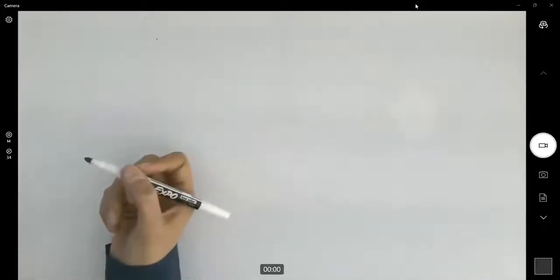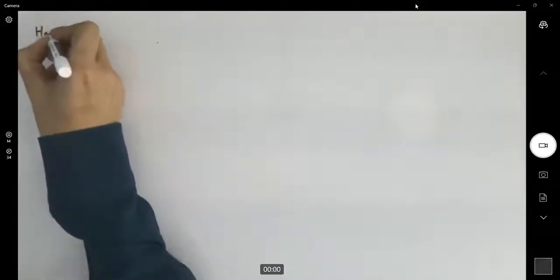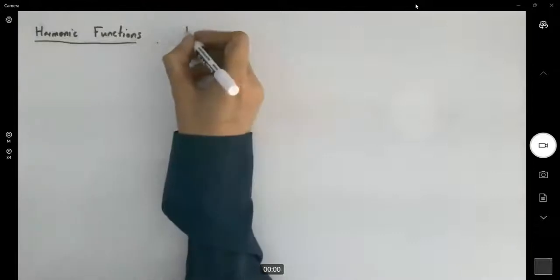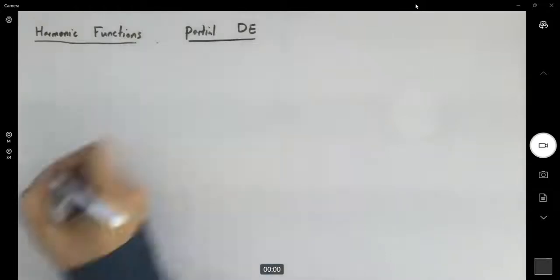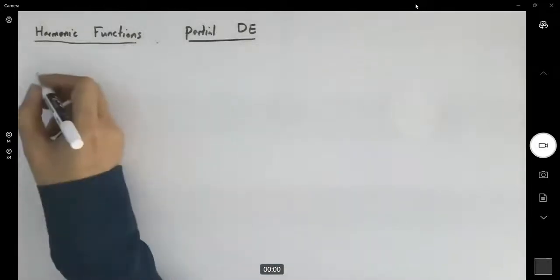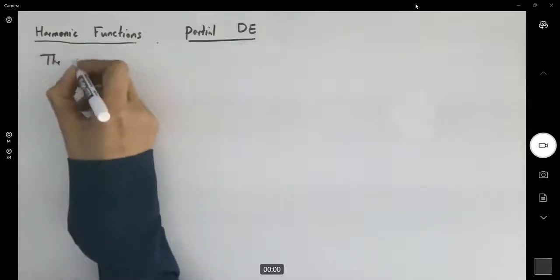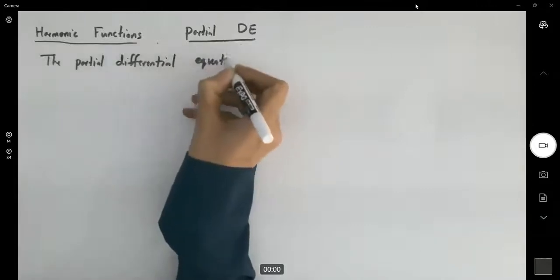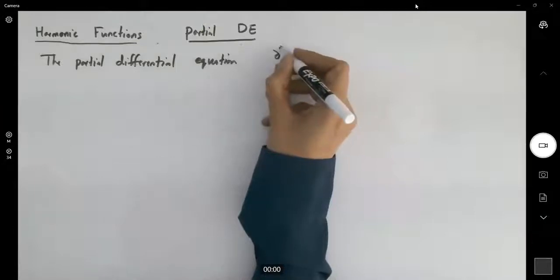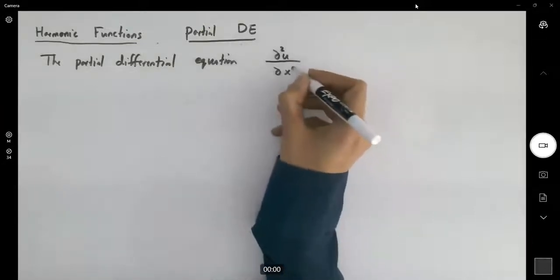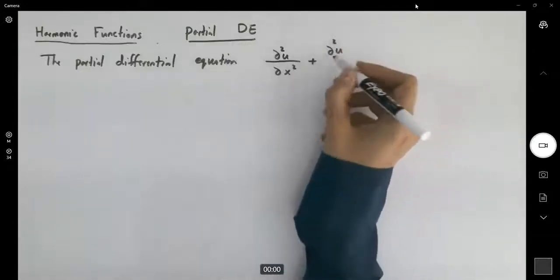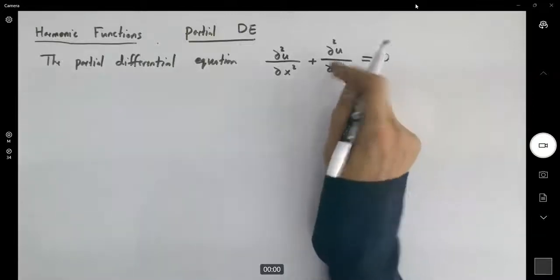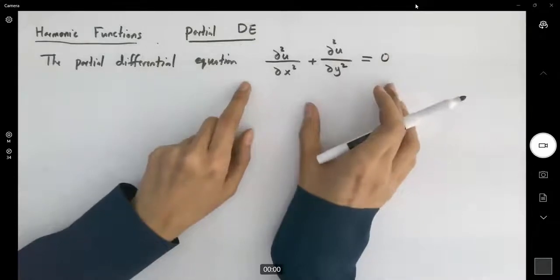Let's talk about harmonic functions. These are partial differential equations. The partial differential equation written as the second partial derivative of u with respect to x, plus the second partial derivative of u with respect to y, equals zero. This equation is called the Laplace equation.